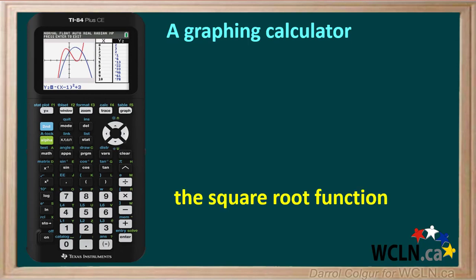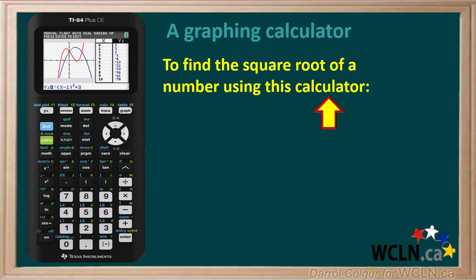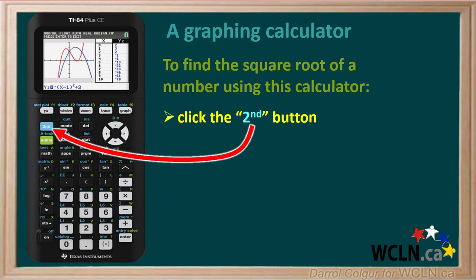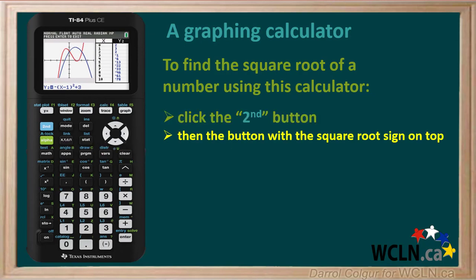This calculator does not have a designated square root button, but its square root function is a second function right above the x squared button here. To find a square root of a number using this calculator, start by clicking the second function, then the button with the square root sign on top. This is the x squared button.